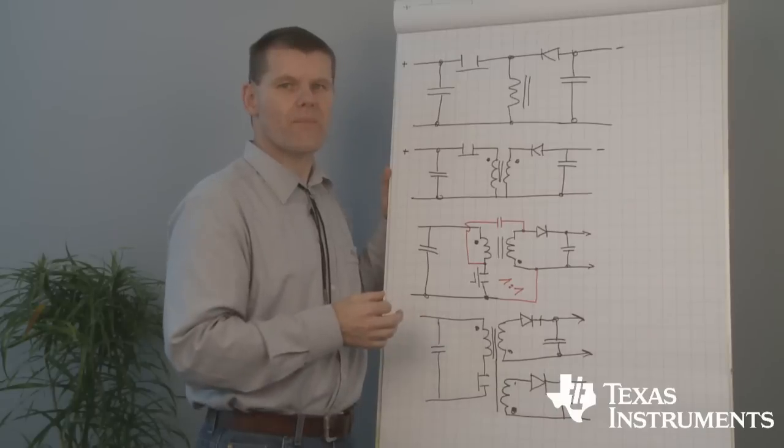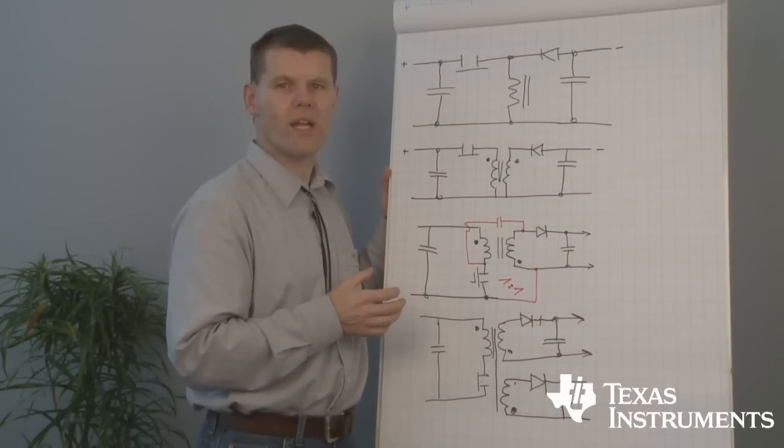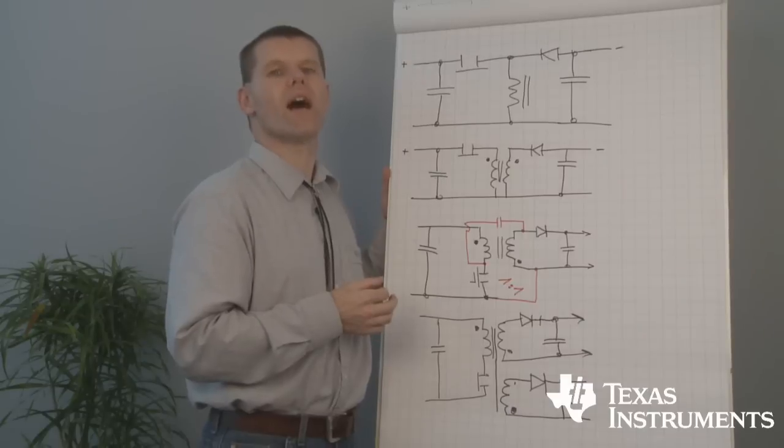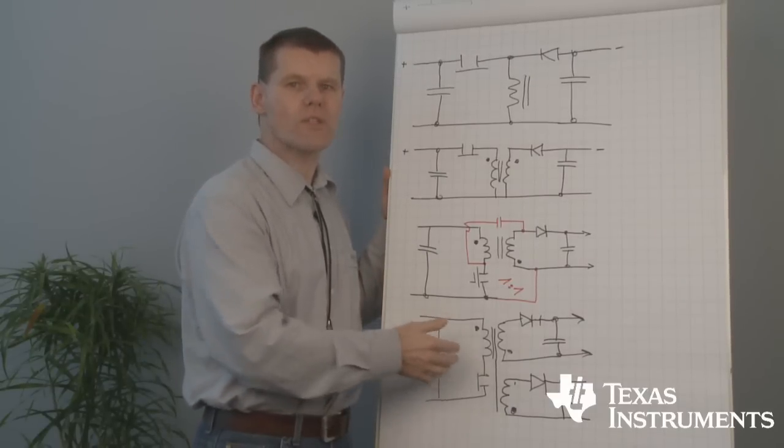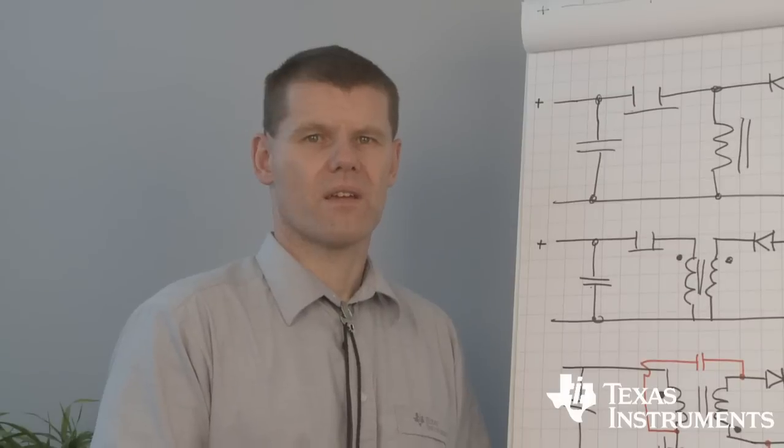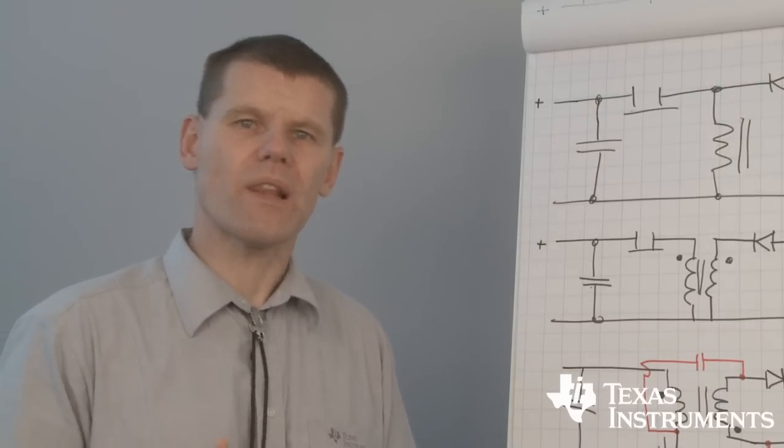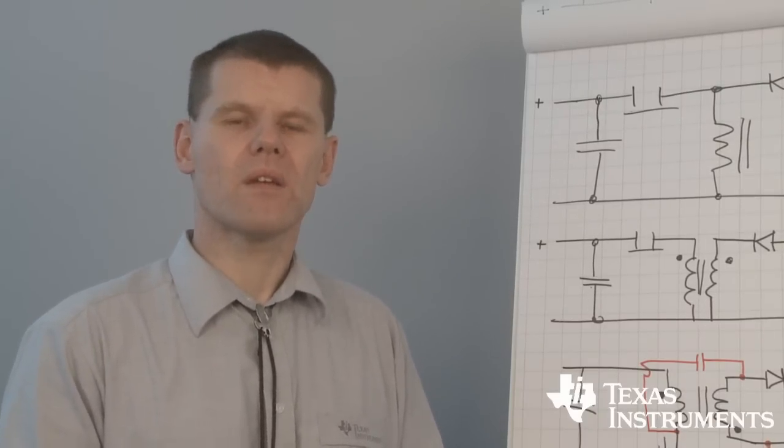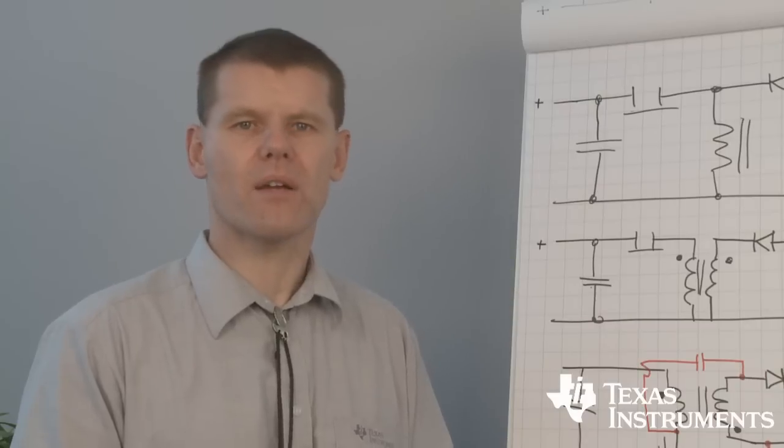To avoid this, there is the possibility for primary side regulation by adding a primary auxiliary winding for closing the loop on the primary side. As you already know, at the end of our presentation, we will link you to an EVM that gives you more detailed information on SEPIC and flyback topology.